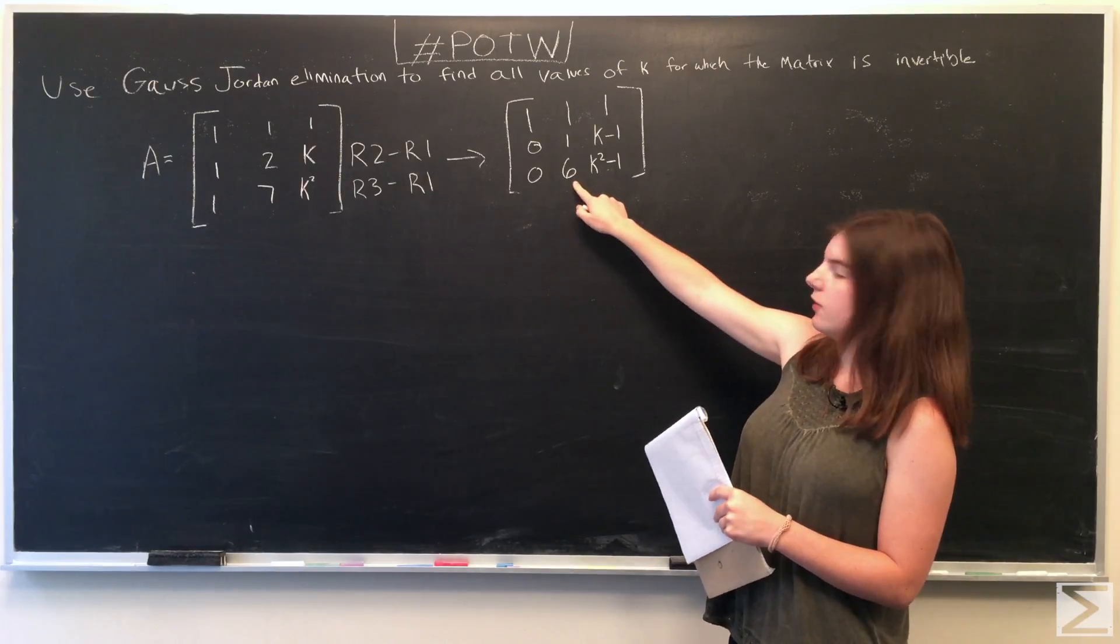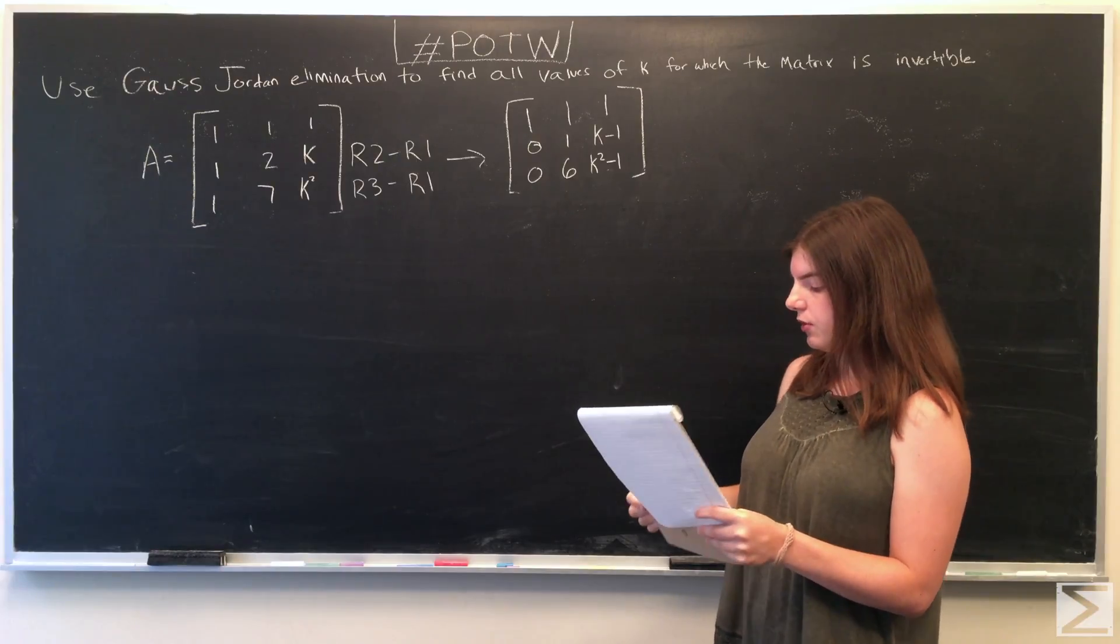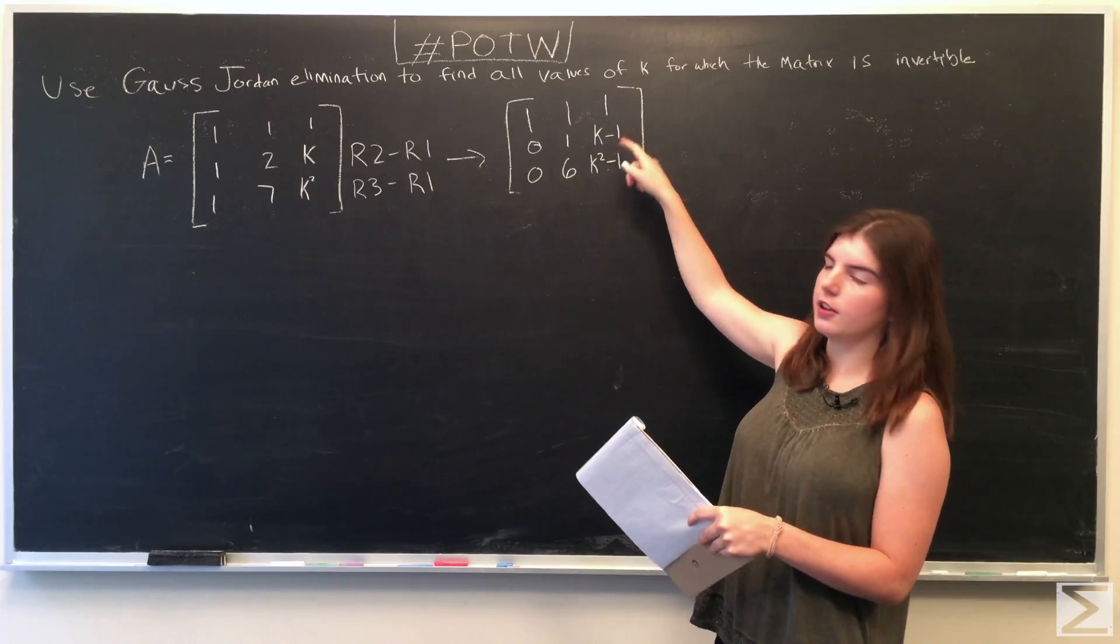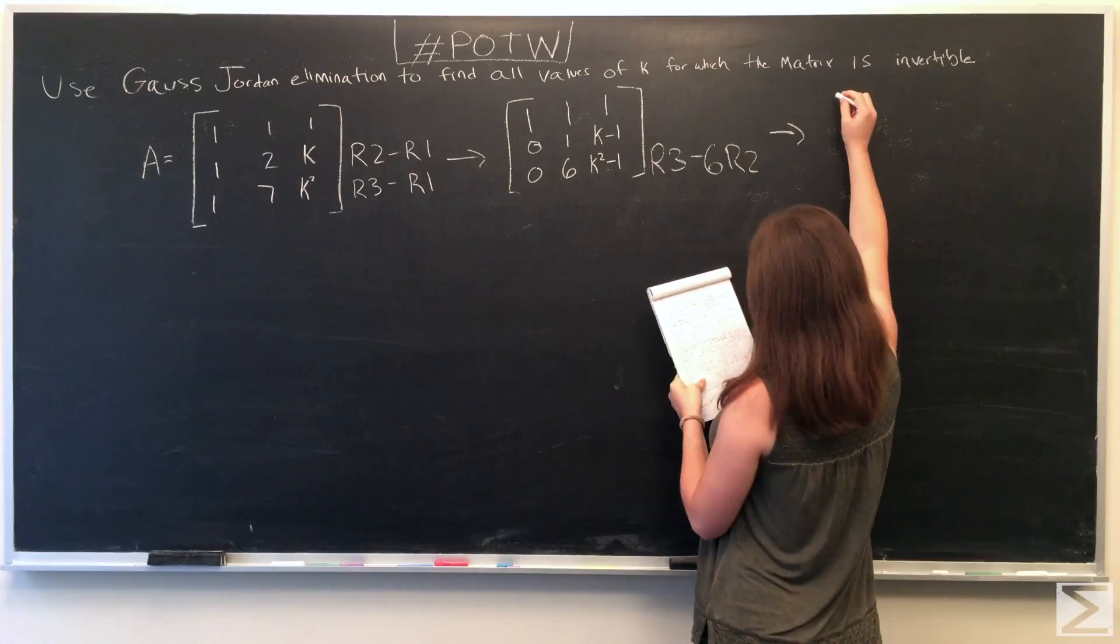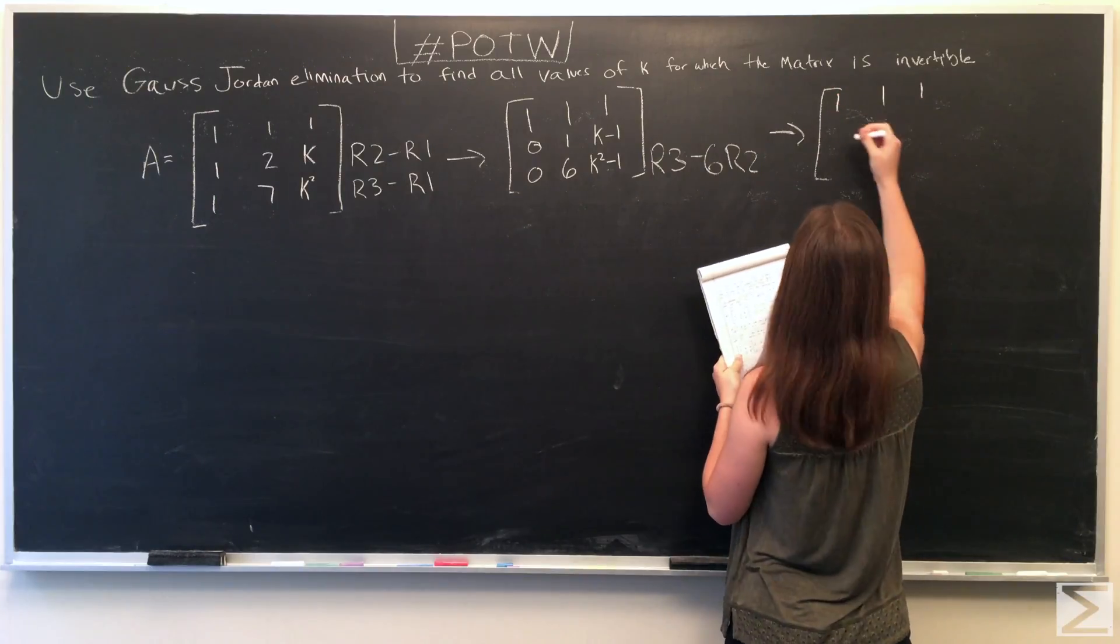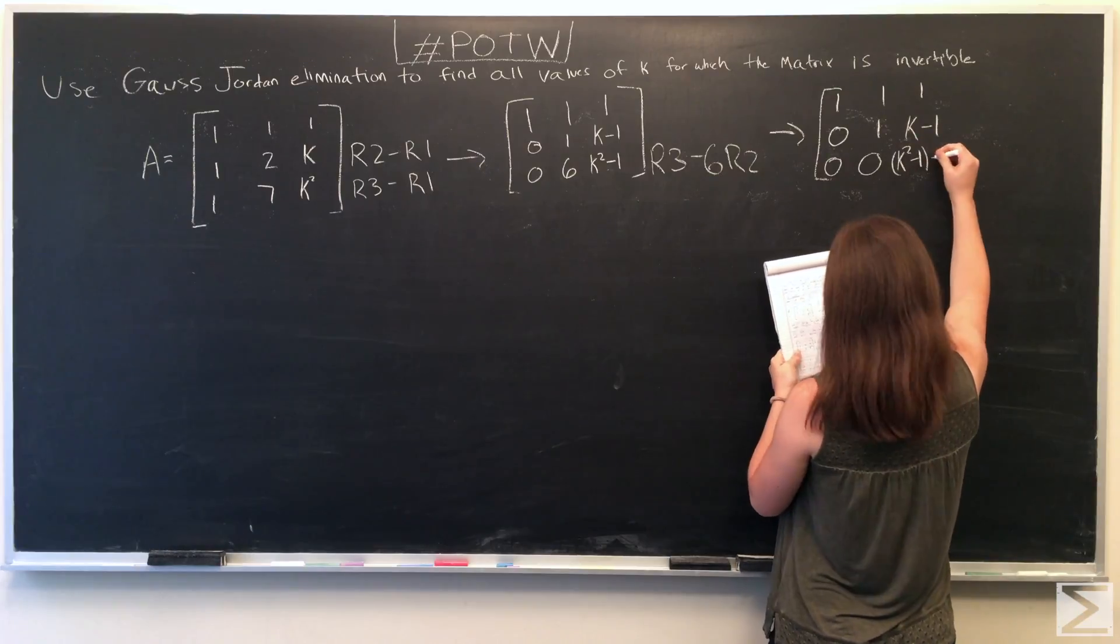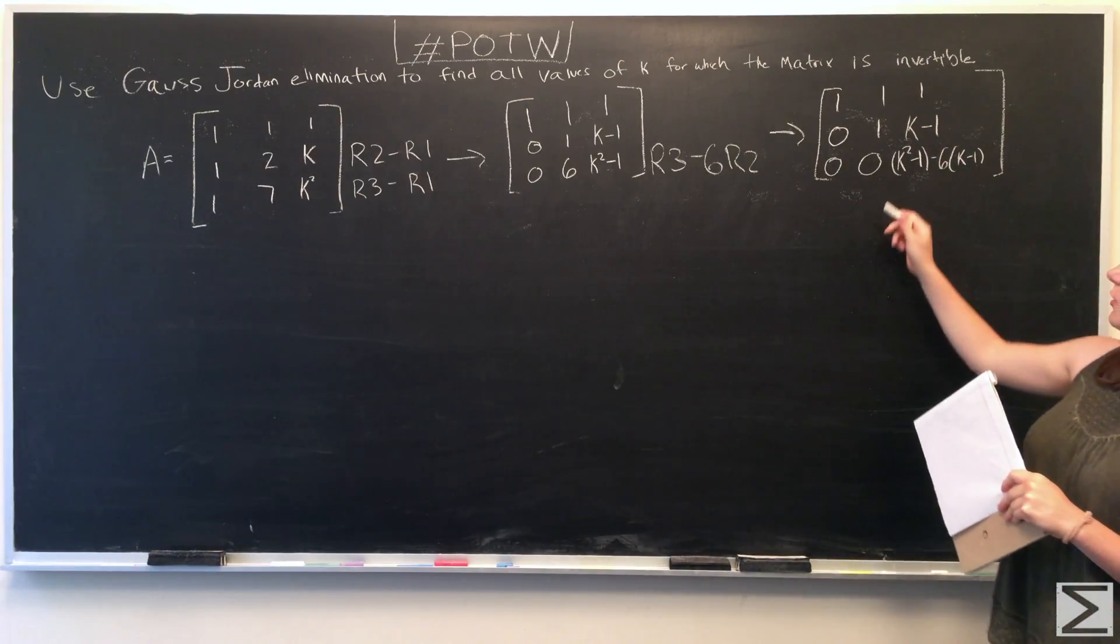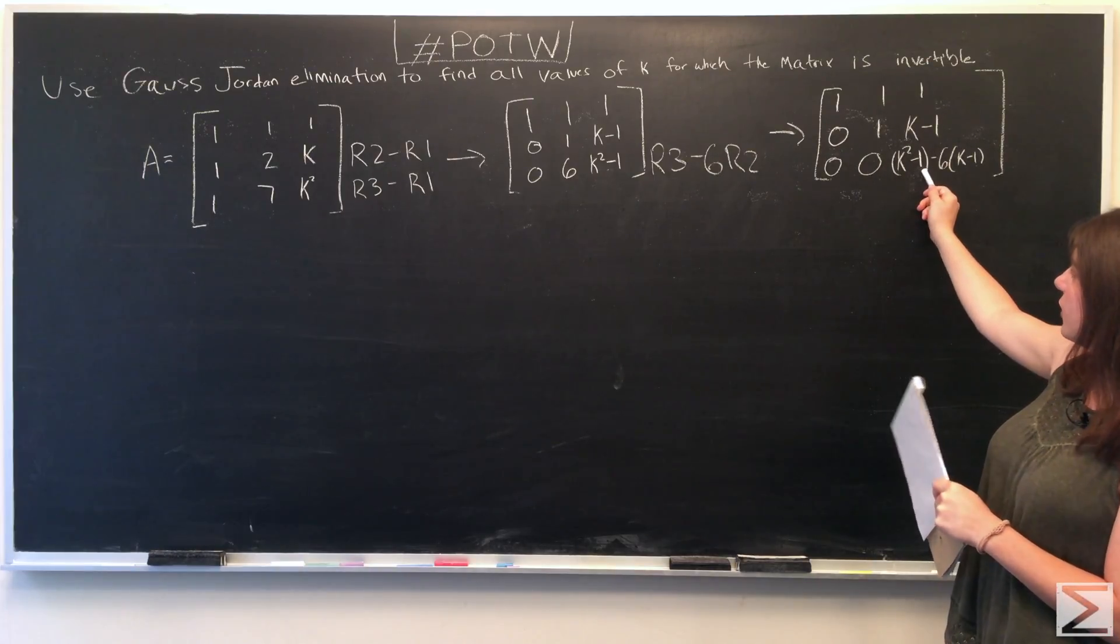So now we want to replace this 6 with a 0. So we're going to do the third row minus 6 times the second row. So we have this as our third row now, and we can reduce this.